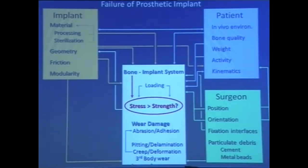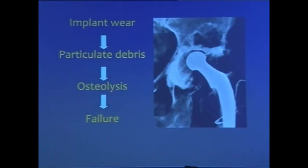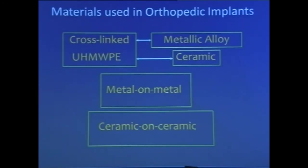The cause of failure of prosthetic implant — to put it very simply — is implant wear resulting in particulate debris, leading to osteolysis and failure. The materials used are cross-linked polyethylene, metallic alloys, ceramic, metal on metal — about 10 years ago — and ceramic on ceramic.